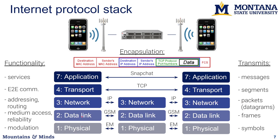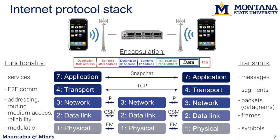Below the network layer, we need to get bits to the cell phone tower. Multiple phones may be trying to connect to the same tower, so they need to take turns or use different spectrum. The data link layer handles medium access — assigning spectrum or time slots to individual devices — as well as reliability and retransmission on links in case of congestion or collisions. This might be GSM or currently 5G.